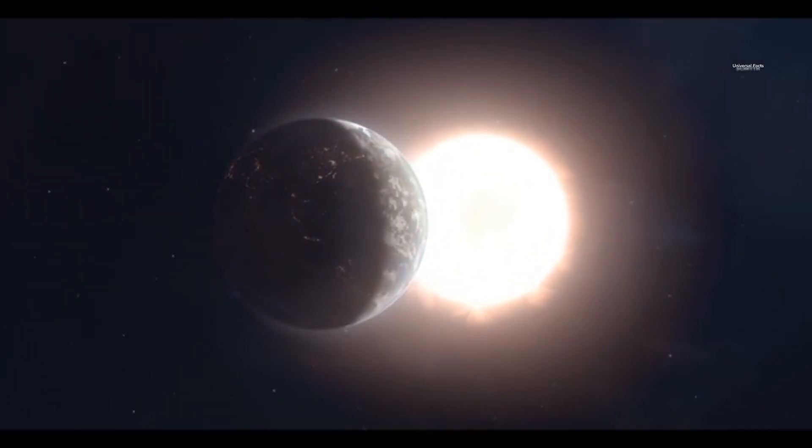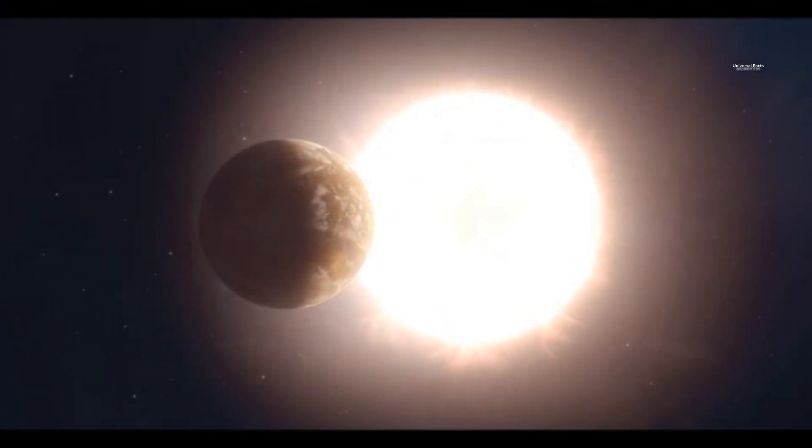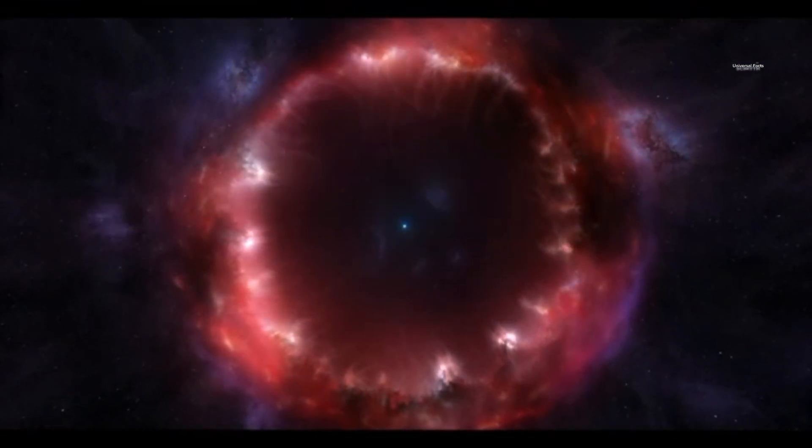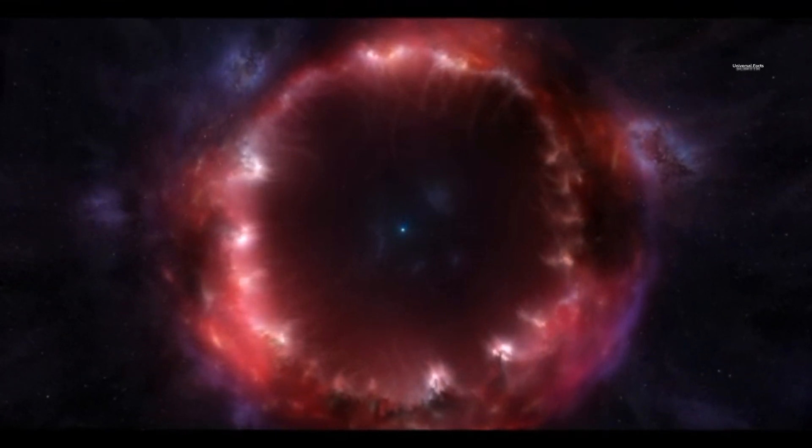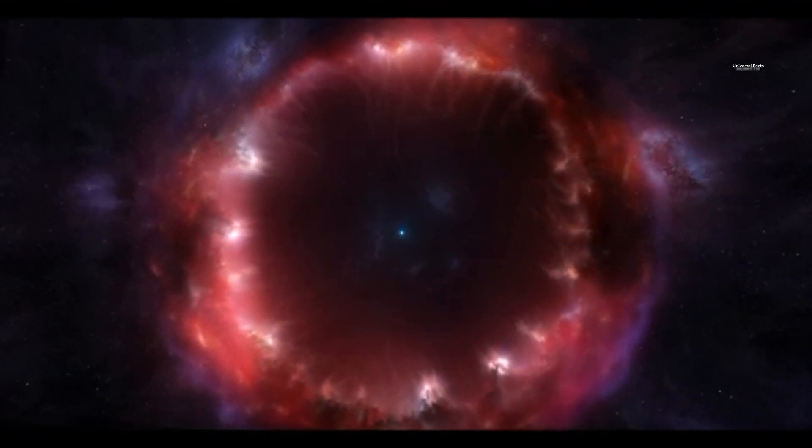Stars with a mass similar to the Sun typically end up as white dwarfs. As hydrogen in the Sun's core depletes, its size will increase, turning it into a red giant. Eventually, the outer layers of this red giant will disperse to form a planetary nebula, while the remaining core will become a white dwarf.